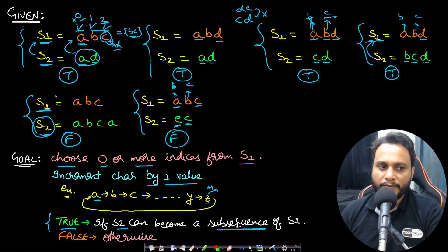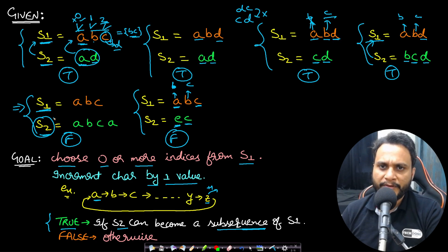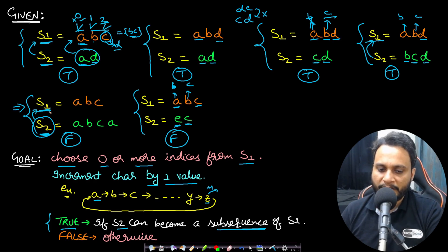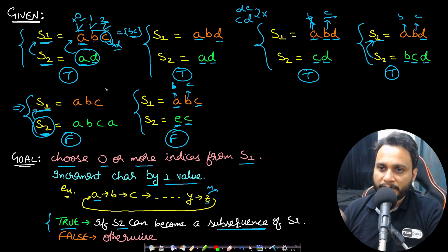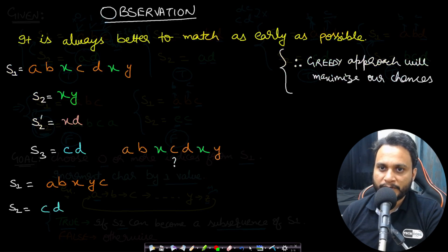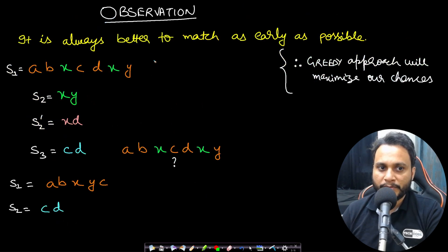Notice that the size check can be a base case: even before solving, we can say the size of s2 should always be less than or equal to the size of s1. With that understood, let's now look at some observations to solve this problem optimally.